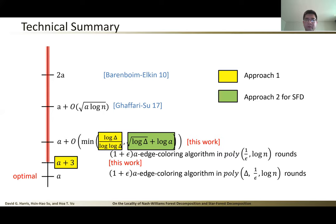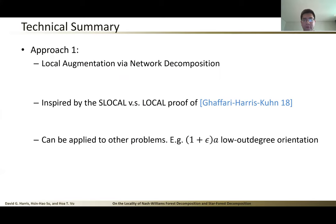Let's basically summarize our result. Now we want to talk a little bit more about the technical summary of our results. Our results follow from two separate approaches. Approach 2, the part marked in green here, is for star forest decomposition, and it follows a more elaborate argument of Ghaffari and Su. But today we are going to focus on approach 1, because the technique there might be more interesting to the distributed community. What's approach 1? It's local augmentation by network decomposition. The method is also inspired by the proof of sLocal versus Local of Ghaffari et al's work. We also show in the paper this technique can be applied to other problems, such as 1 + ε a low-out-degree orientation problem.